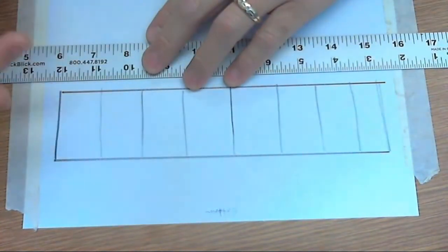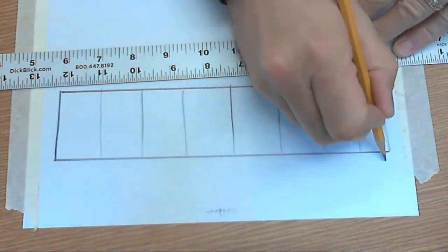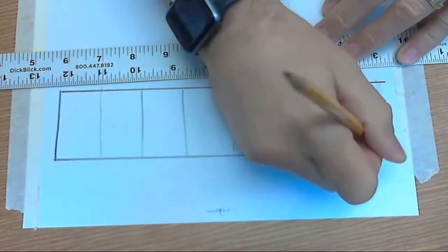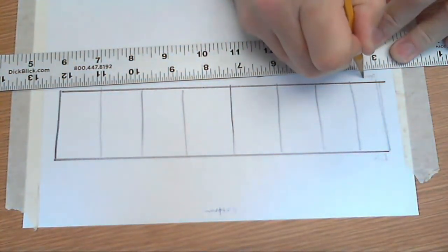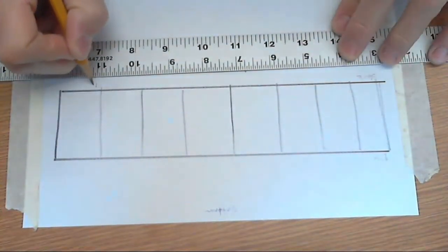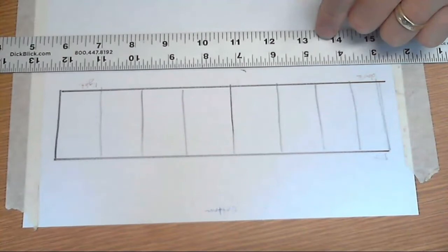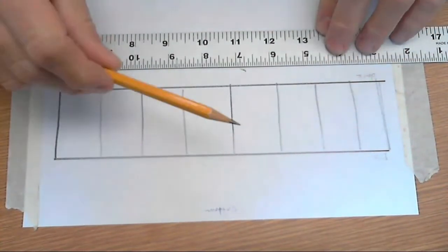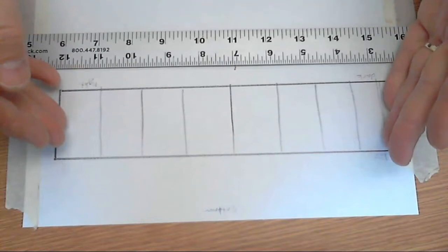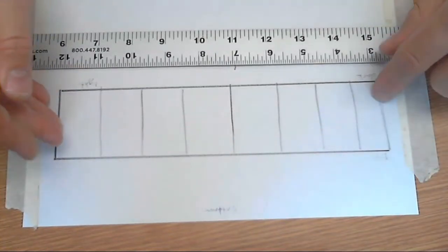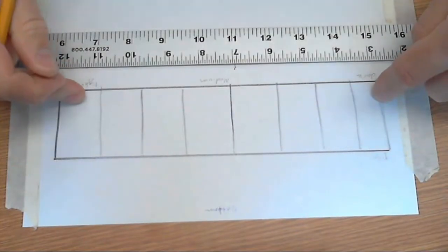And then what we're gonna do is we're gonna go from dark to light. Now this one over here, the lightest value that you can make is just pure white, so you just leave it alone. And so what we want to do is we want to have eight distinct levels. So this is gonna be my dark, this one's gonna be my medium, and this is gonna be my light.